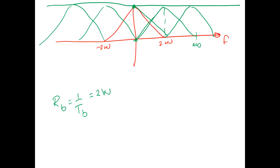So the triangular pulse shape does fulfill the reduced Nyquist criteria. Its advantages: no sharp transition in the frequency domain, and its time domain decay is faster than the minimum bandwidth pulse since it is proportional to 1/t². However, the disadvantage is that we need double the bandwidth compared to the minimum bandwidth rectangular pulse.